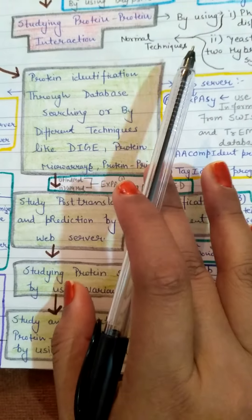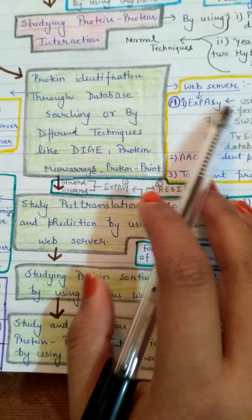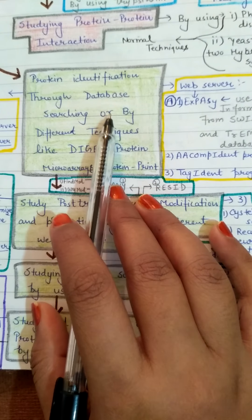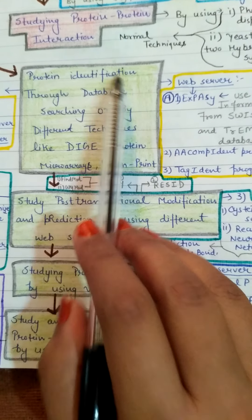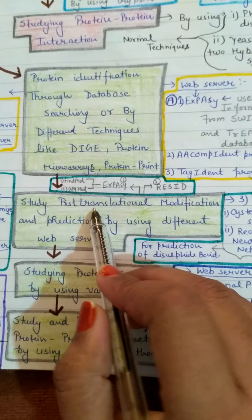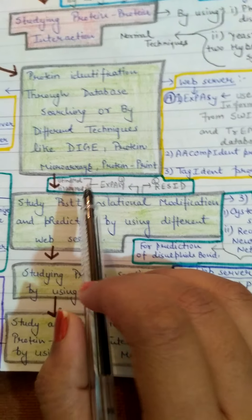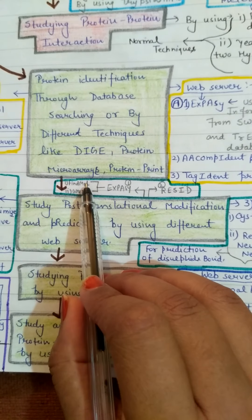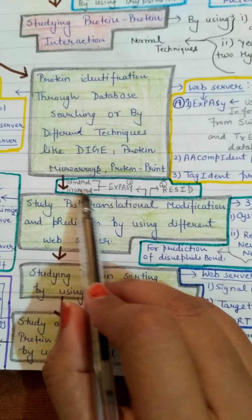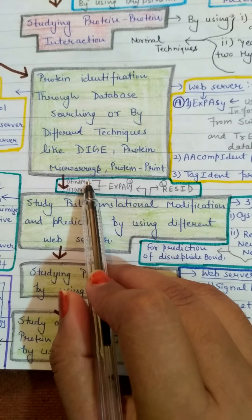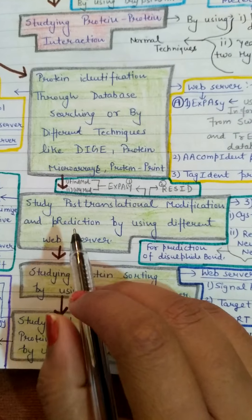Because our protein is in native form, post-translation modification converts it into its tertiary structure. So we will use different servers — the Systeen Web Server and Recursive Neural Network for prediction of disulfide bonds. This is what I have told you in the last video. In addition, we use some other methods and web servers: Xpacy and Resid. We also use both for post-translation modification.